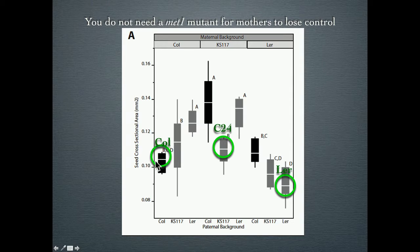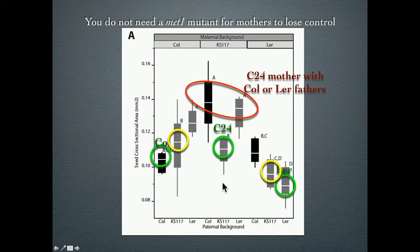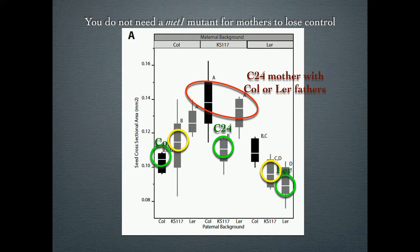So in this case, here is a Columbia isolate - an accession - along with C24 and Landsberg. These are three different ecotypes, lab accessions that we work with. What I'm showing you is seed size, basically cross-sectional area of images of the seeds. If I cross Landsberg or Columbia onto C24, you can see that same sort of increase in growth that you would see if there was a loss of imprinting. But in the yellow circles, you see that reciprocal - this is showing a definite parent-of-origin effect.